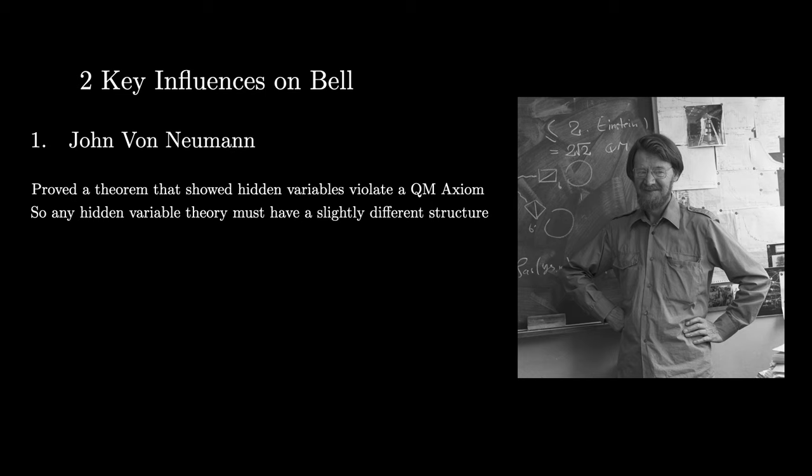And interestingly, although Bell knew about this proof, an English translation of the work was not available until 1955. So Bell initially only knew about it secondhand, and he was told that von Neumann ruled out hidden variable theories altogether. A mistaken idea that led to Bell's shock at seeing the second significant result. David Bohm's development of Bohmian Mechanics in 1952. Bohmian Mechanics is a hidden variable theory that has exactly the type of structure von Neumann's proof did not exclude. It was these two apparently contradictory ideas, in combination with the EPR argument, that seemed to have led Bell to his monumental achievement in discovering the theorem that bears his name.